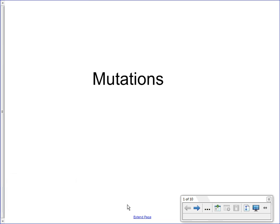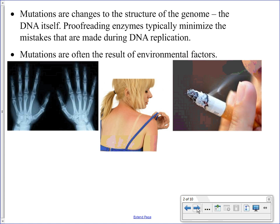This lesson is going to be on mutations. We've already seen a little bit about mutations — when we talked about cancer, we talked about carcinogens, cancer-causing agents, and those cancer-causing agents are typically causing mutations. When we talk about mutations, what we are really dealing with is the genetic information itself — the DNA and changes to the DNA.